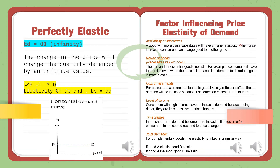The second factor is the nature of goods. The demand for essential goods is inelastic — for example, consumers still buy rice even when its price increases. Meanwhile, the demand for luxury goods is more elastic, and even a small change in price leads to a large change in quantity demanded, as consumers can choose to stop buying luxury items.